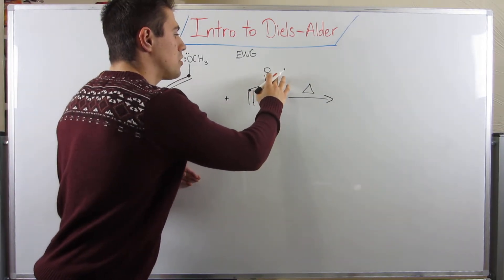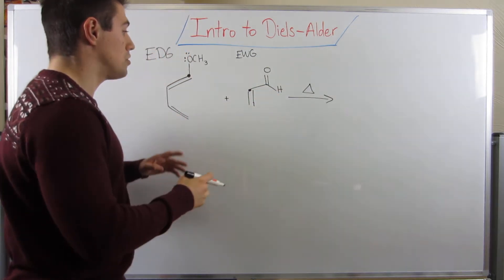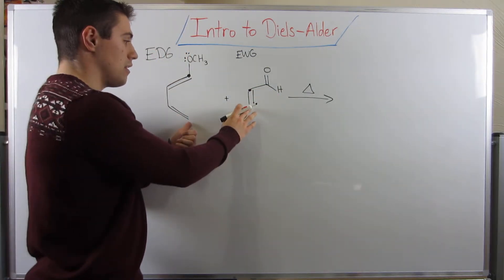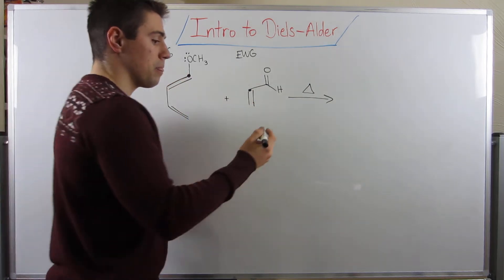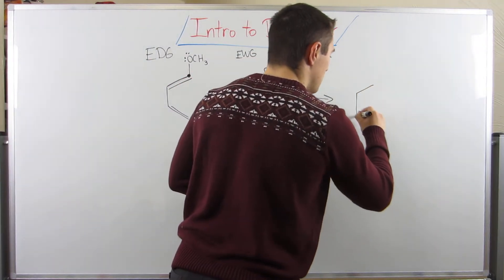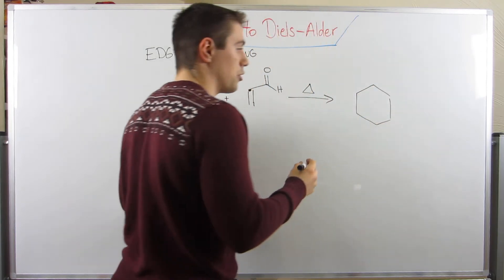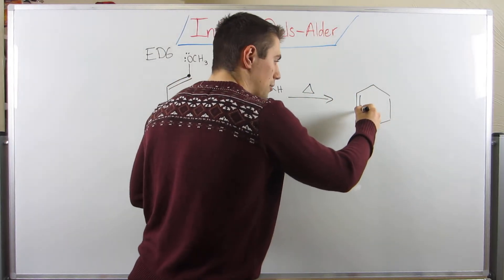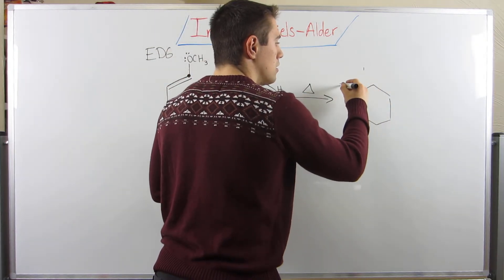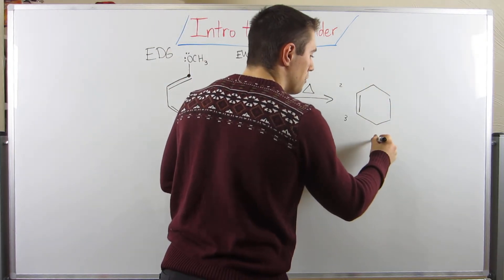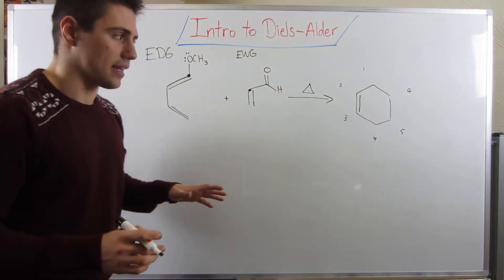The first thing you can always do, no matter what kind of diene or dienophile you have, once you've made sure that the respective charges these groups induce are matched up, is you can always draw a six-membered ring. A six-membered ring is always made from the Diels-Alder reaction. Put a double bond right here, and I'm going to number this carbon one, two, three, four, five, and six.